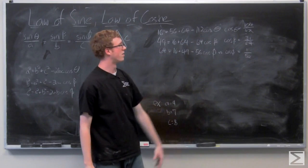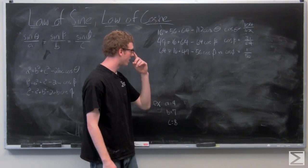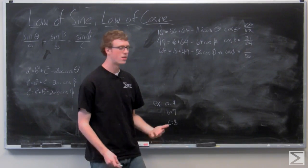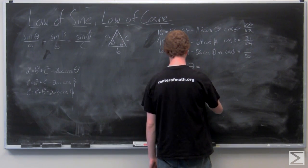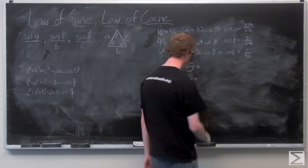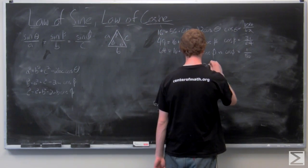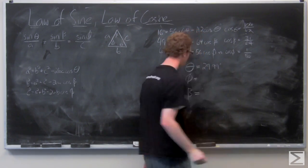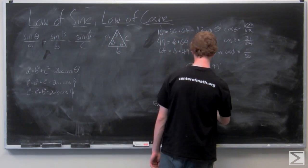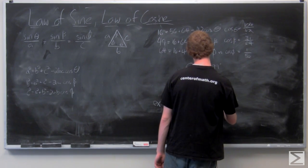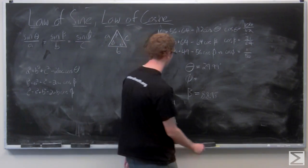So we found what the cosine of all the angles is equal to, and now all we need to do is take an inverse cosine of each. I've already done so. You need your calculator in order to do this, but you're going to come up with theta is 29.99 degrees. Beta is 88.98. And phi is 61.03 degrees.